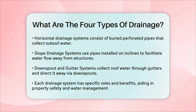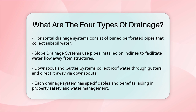Lastly, there's the downspout and gutter system. This system collects water from the roof of a building through gutters and diverts it to the ground via downspouts. Downspouts are connected to gutters and carry water away from the roof, emptying it out on a slope to prevent pooling at the base.